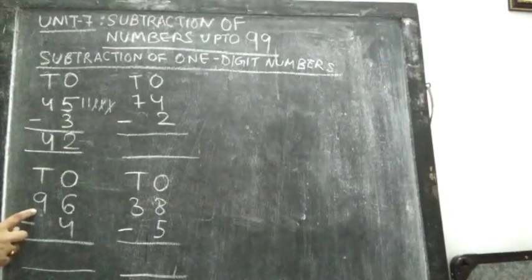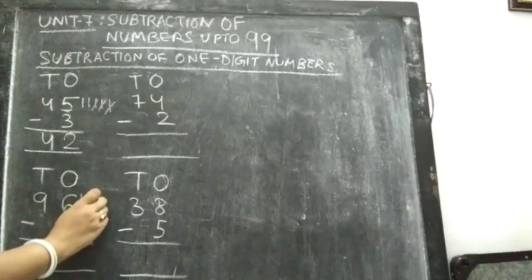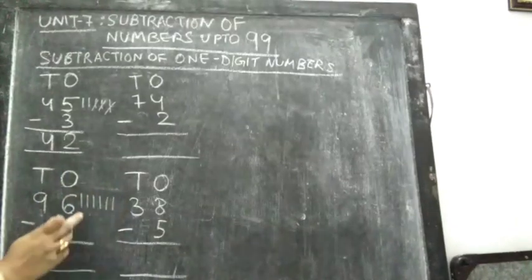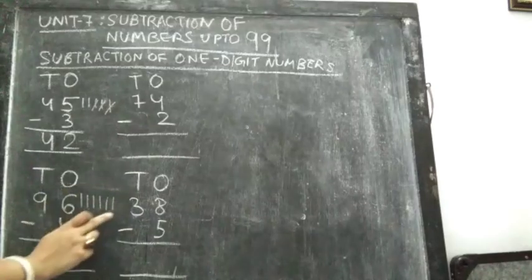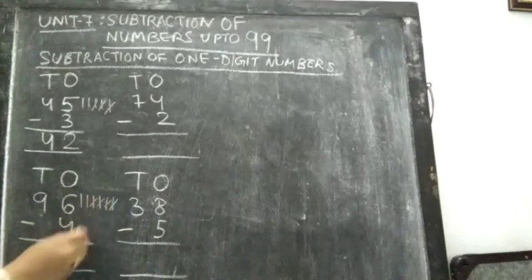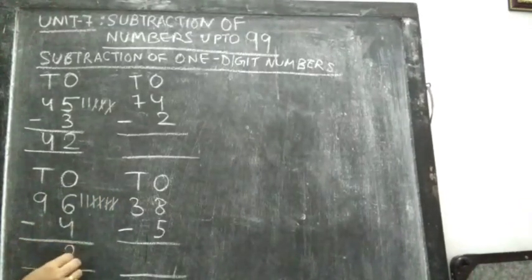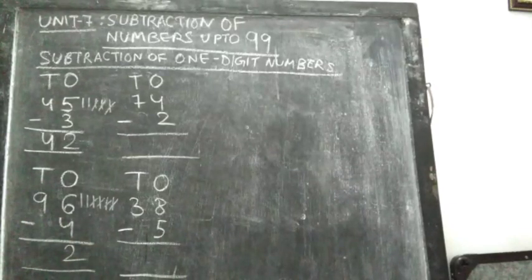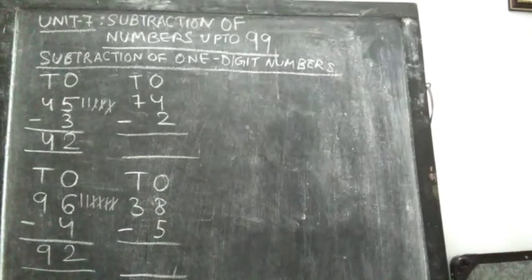Now this one: 96 minus 4. See the ones column — 6 minus 4. Draw 6 lines: 1, 2, 3, 4, 5, 6. From these 6 lines, we have to cut down 4 lines: 1, 2, 3, 4. So how many are left? 2. So write 2. And in the 10s column, nothing to subtract — only one number is there. Simply copy and paste and write 9.